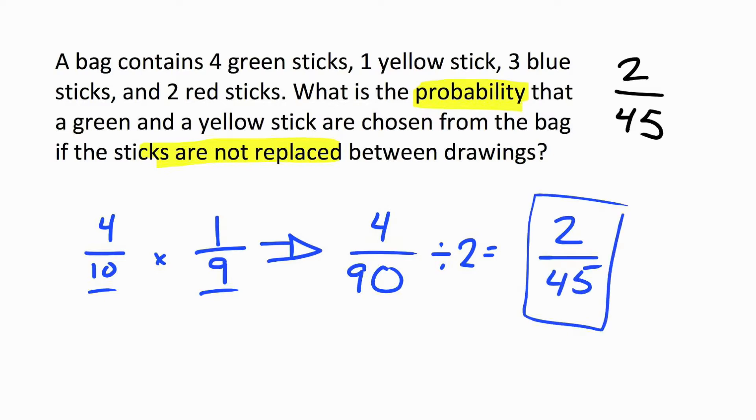All right. So on the actual SHSAT, the answer 1 out of 25 and 4 out of 90 will both probably be choices, right? But you need to find the correct answer, which is 2 out of 45, which is one of the reasons why the SHSAT exam is so challenging.